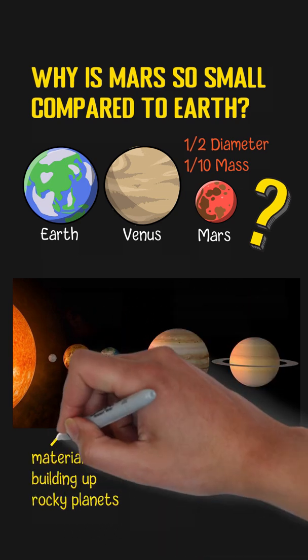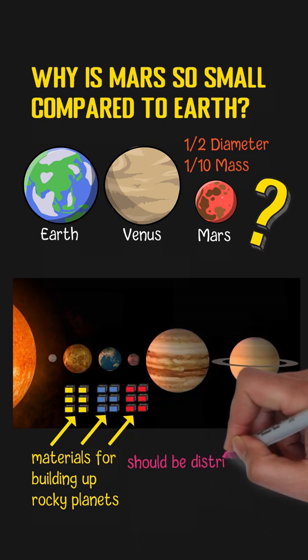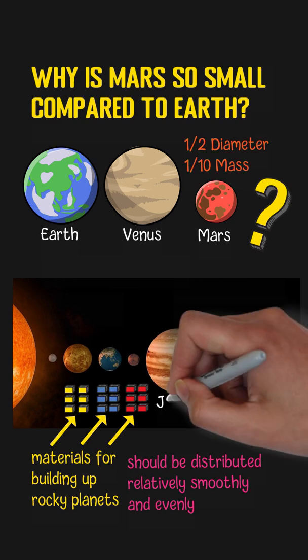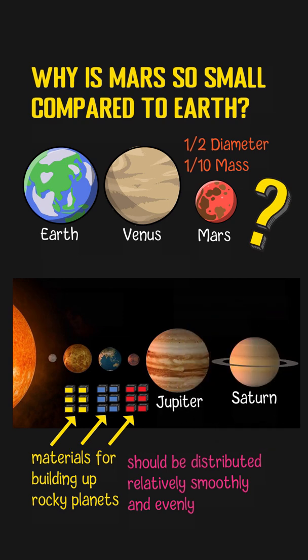Theoretically, those materials should be distributed relatively smoothly and evenly throughout the protoplanetary disk. However, Mars has huge neighbors: Jupiter and Saturn.